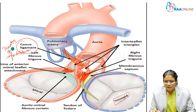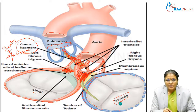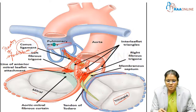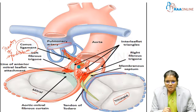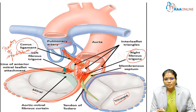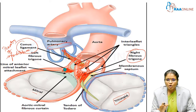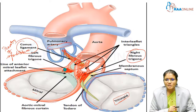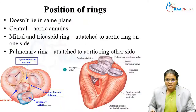In summary, the fibrous skeleton includes: rings of the tricuspid valve, rings of the mitral valve, rings of the aortic valve formed by scallops, rings of the pulmonary valve formed by scallops, the tendon of infundibulum, the central fibrous body (right fibrous trigone), and the left fibrous trigone otherwise called trigonum fibrosum sinistrum. These are the exact structures that form the fibrous skeleton of the heart.